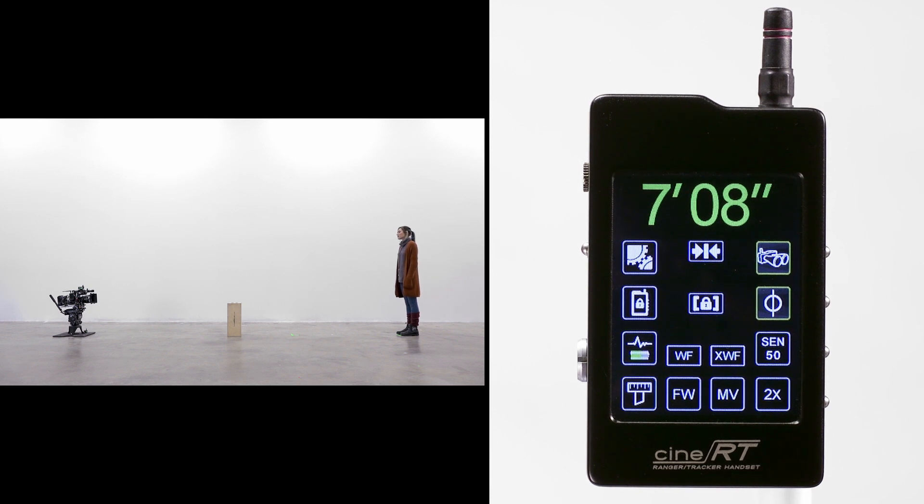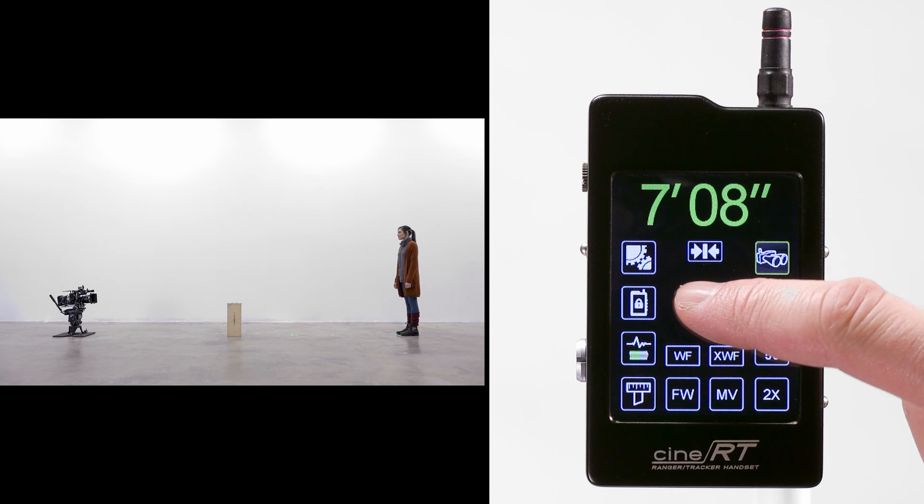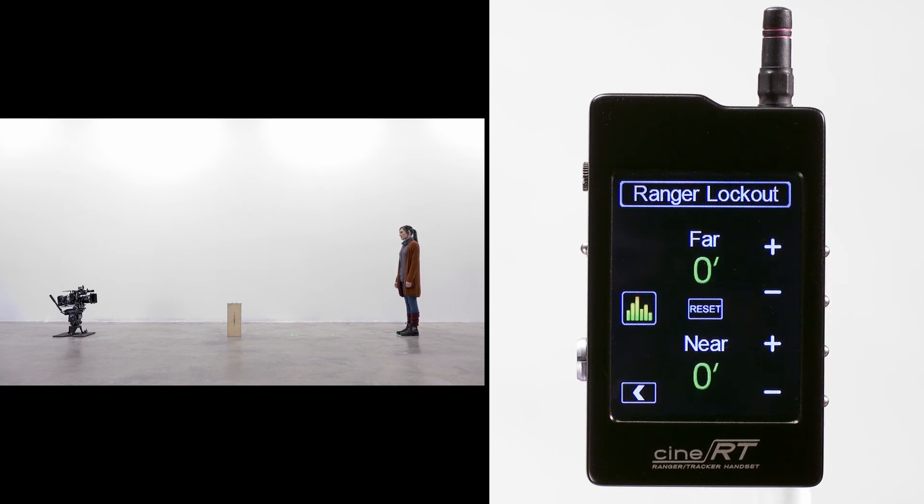In this example, the AppleBox prevents us from reading our subject. A quick solution is to set a lockout to ignore readings in that portion of the range.